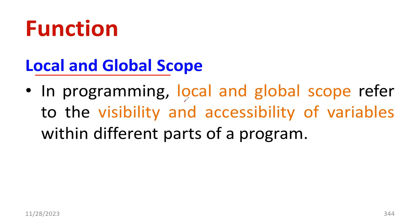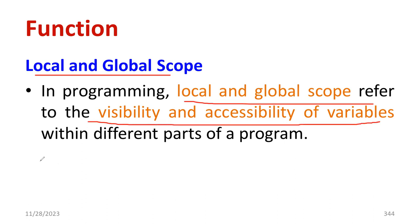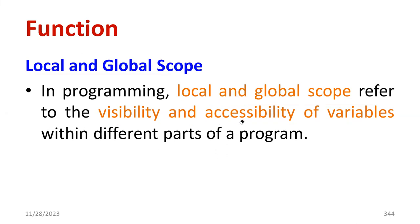In Python programming, local and global scope refers to the visibility as well as accessibility of variables within different parts of the program. Suppose a program has many lines and there is a function in between. Whenever you are declaring and using a variable, you should identify whether the variable is present inside the function or outside the function. Otherwise, you may get errors. You need to consider the visibility and accessibility of the variable.